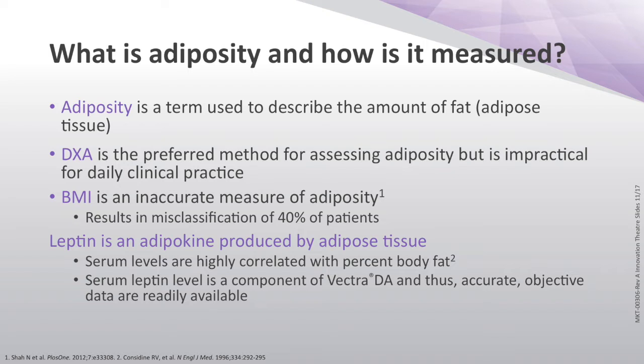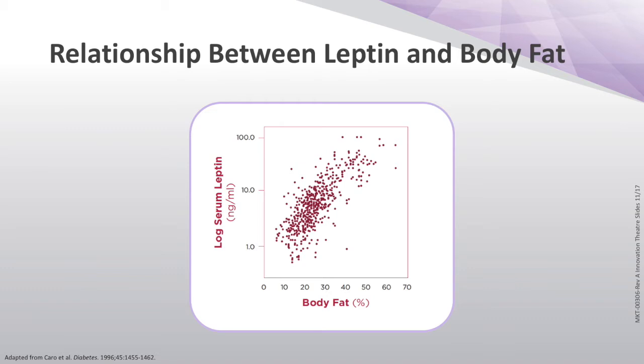BMI is a very imperfect appraiser of fat content. What we really want to know is how much white fat there is, because white fat is a metabolically and immunologically very active organ. It produces multiple inflammatory cytokines and adipokines important in the integrated immune response. There is a very reliable marker known as leptin, a pleomorphic cytokine we're still trying to completely understand, but levels of leptin are correlated with percent body fat. And leptin has been in the Vectra DA.